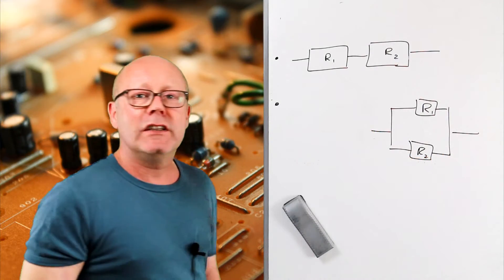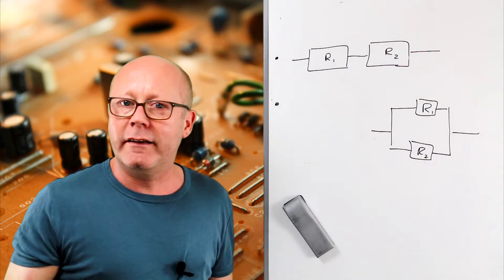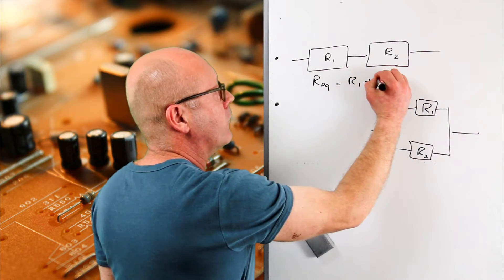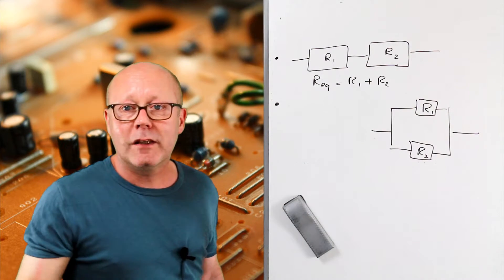When you have two resistors in series, it's easy to calculate the equivalent resistor. So R equivalent is R1 plus R2. You can do it mentally. It's very easy.